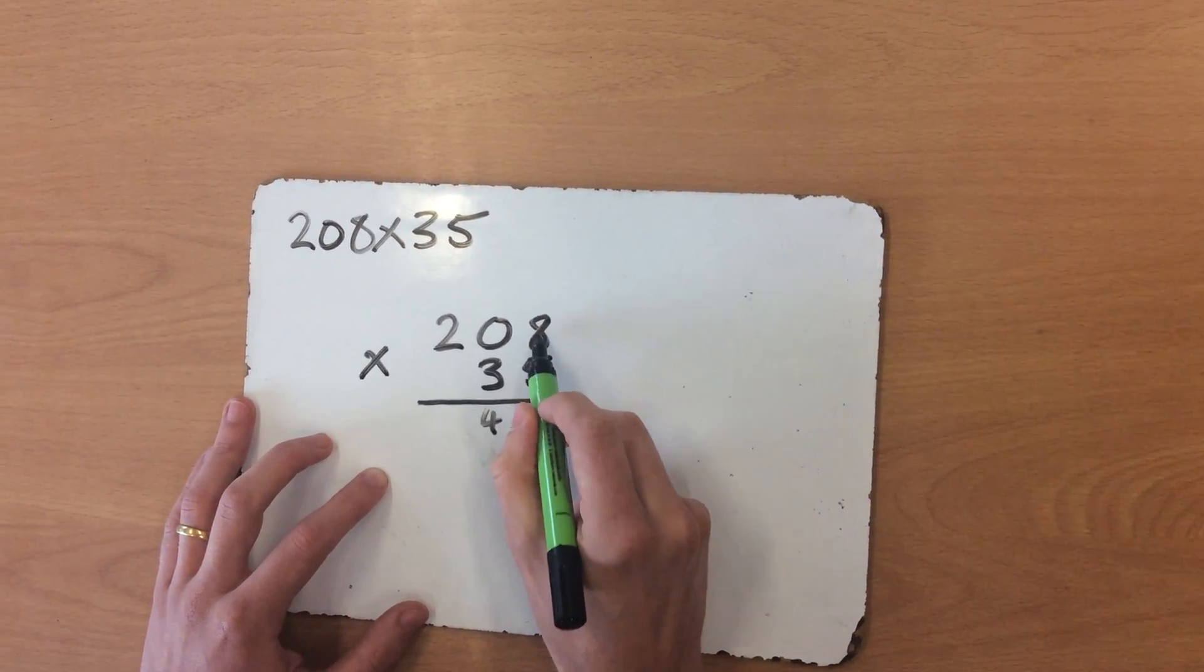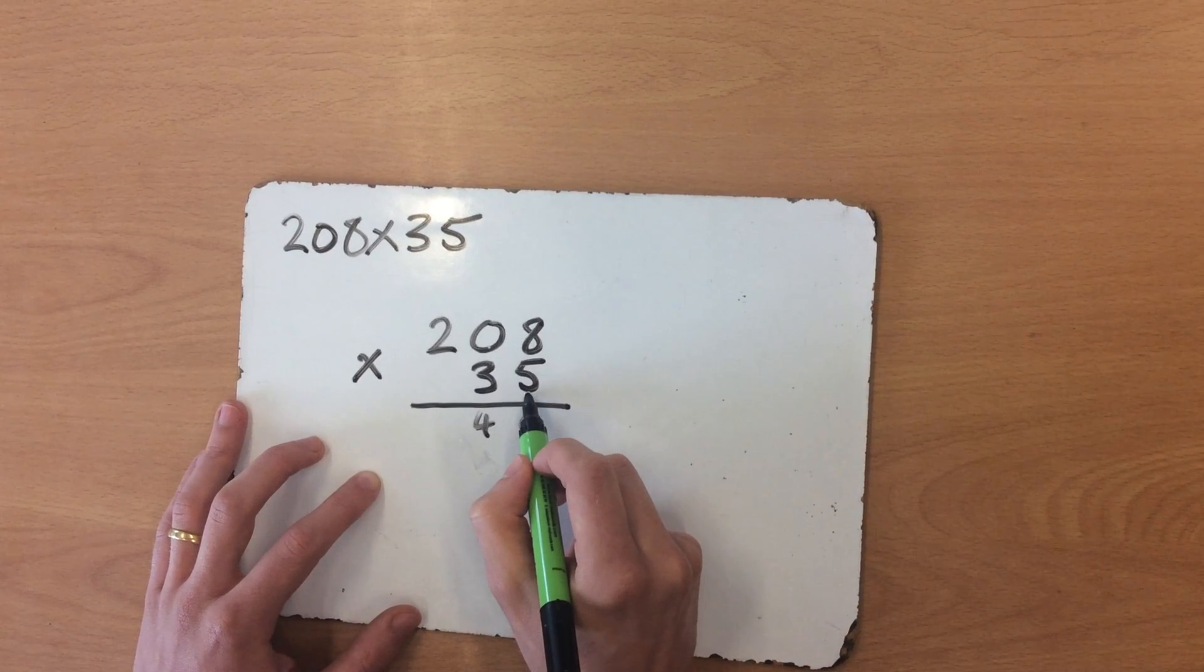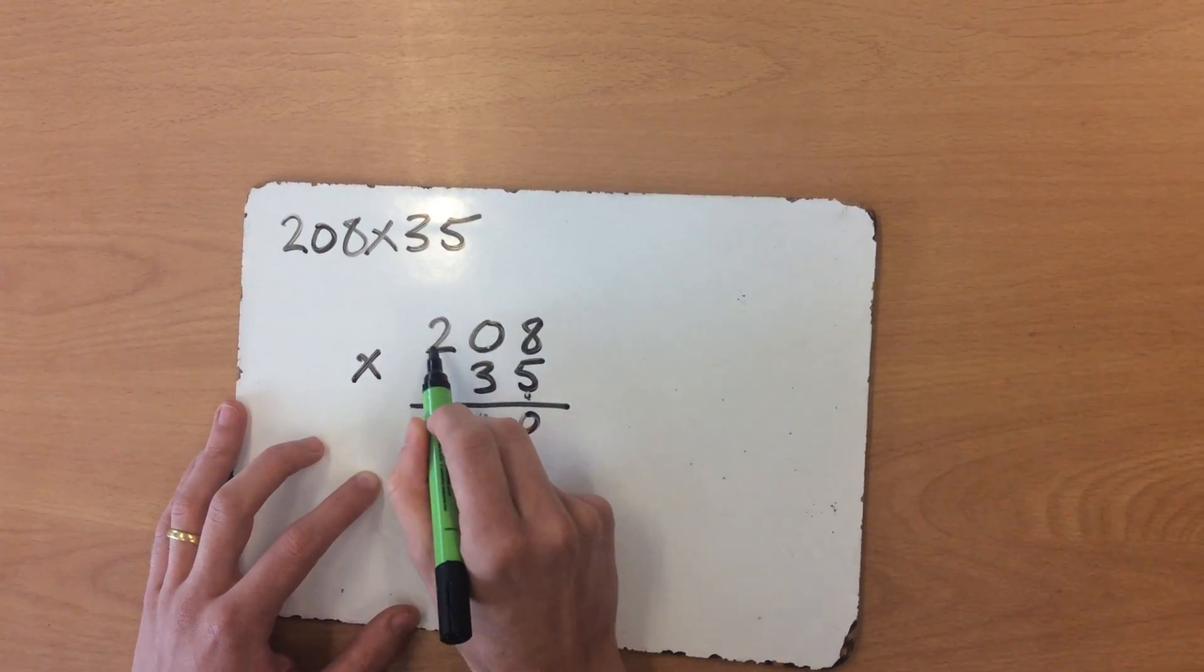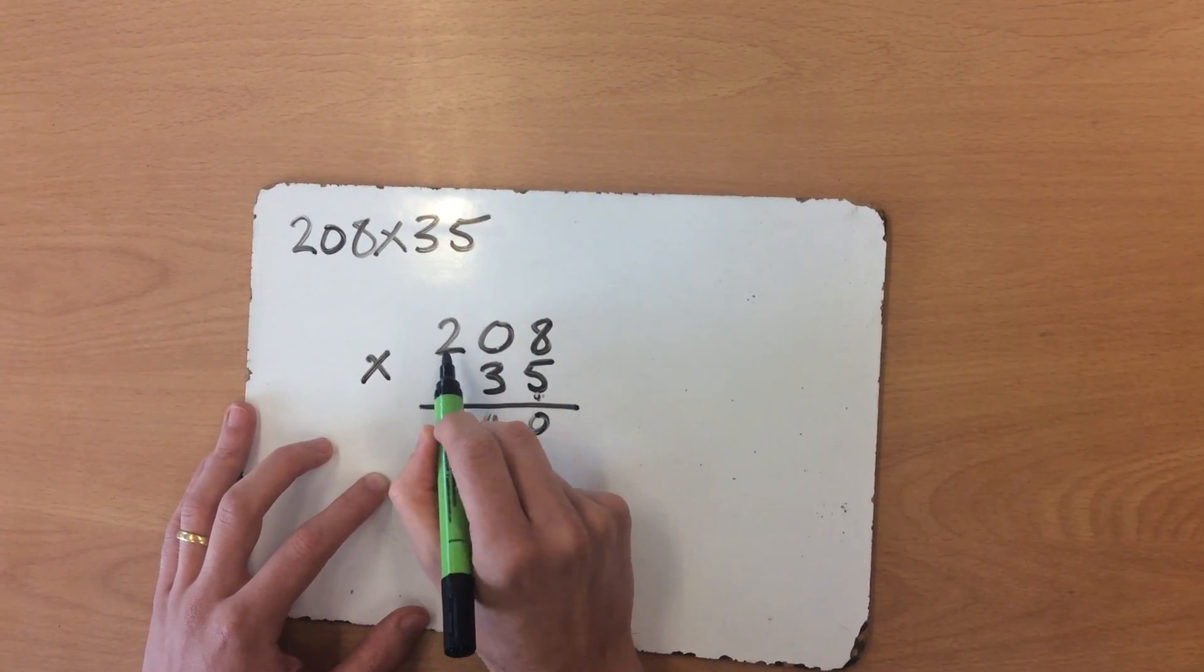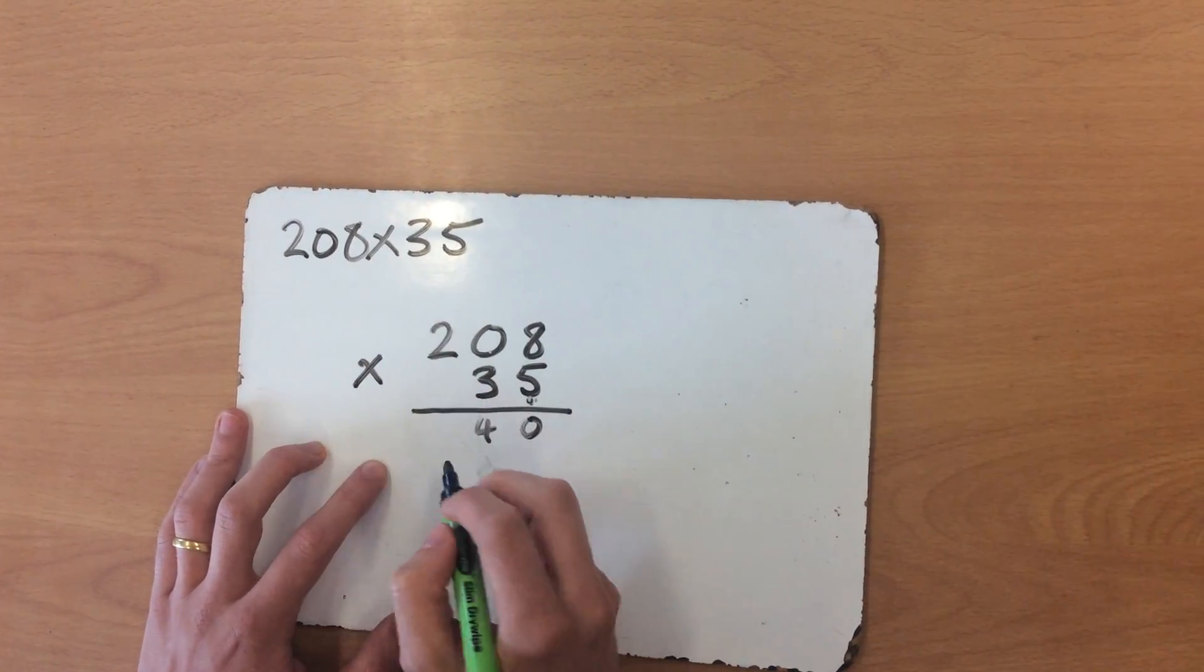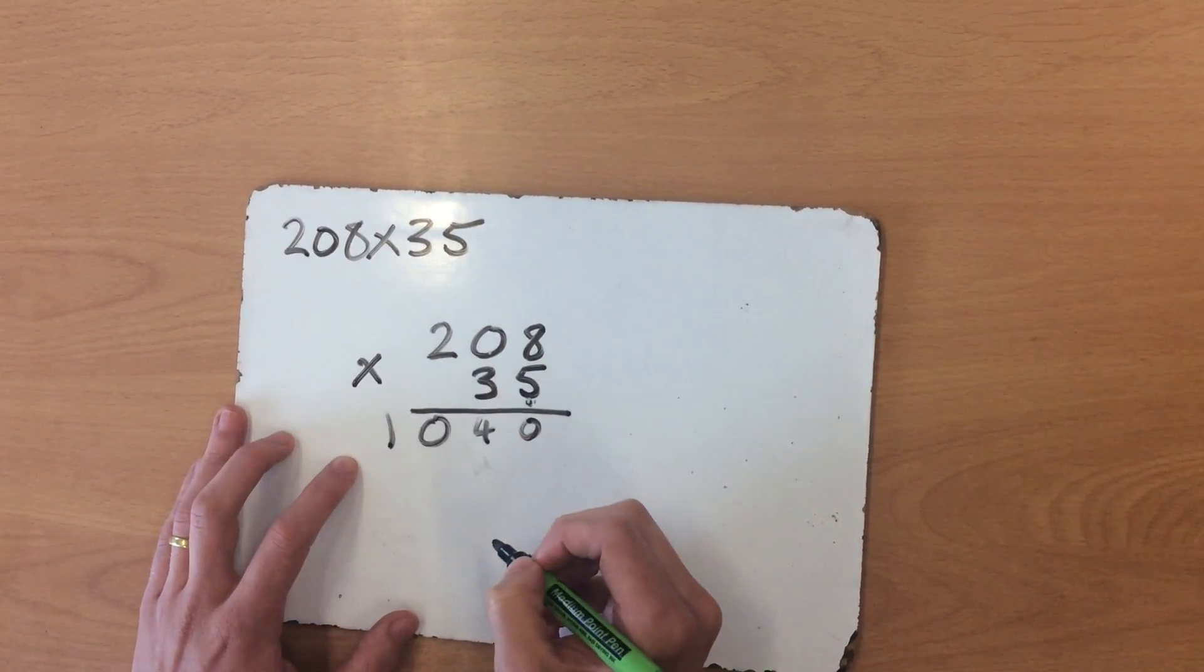Now I've done 5 times 8 and 5 times 0. Next I need to do 5 times 2. So 5 times 2 is 10, but because I've got nothing else on this side, I'm just going to write the number 10.